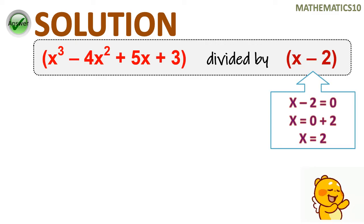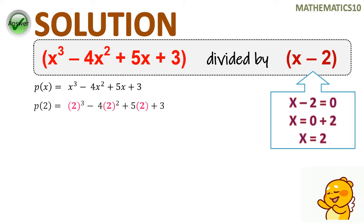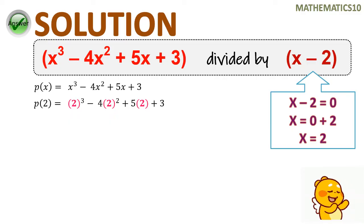How are we going to start finding the remainder without using synthetic division or long division? We are going to use the same way we find the value of x based on the divisor given. So here, x minus 2 equals 0, and we got x equals positive 2. And after that, we will simply substitute the value of x in our polynomial, the P of x.